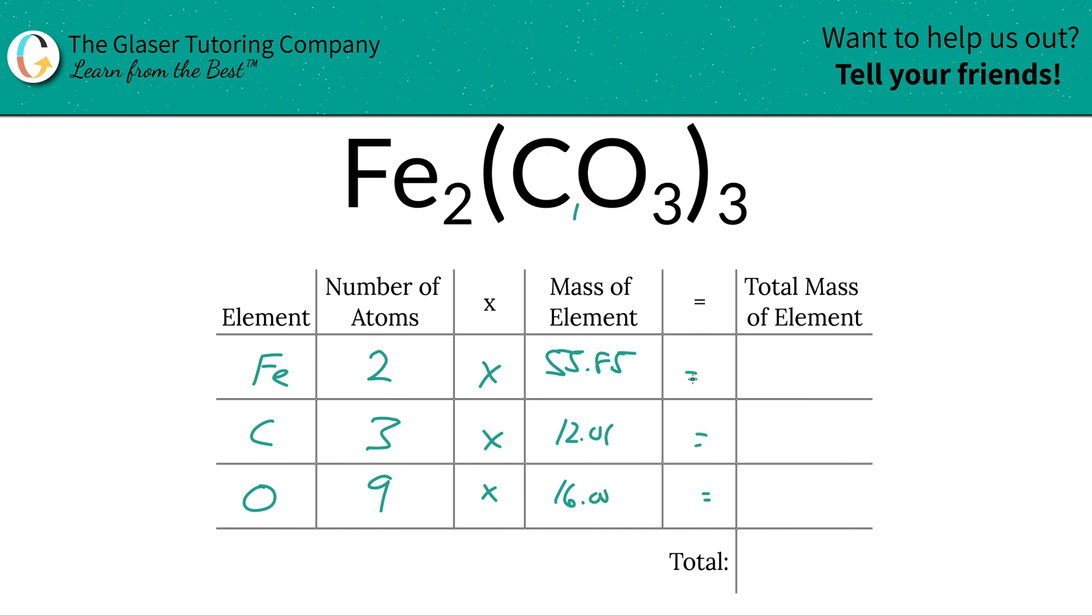Then we're simply going to take those values here and multiply them across to find the total mass of that particular element. So for iron, it's about 111.70. The total mass of carbon here is going to be 36.03. And then for oxygen, it's just nine times 16, which should work out to be about 144.